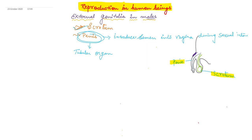The penis is divided into three regions. This area is known as the root. This area is known as the body of the penis. And the third region is known as the glans of the penis. So in the penis we have three regions: root of the penis, body of the penis, and glans of the penis.